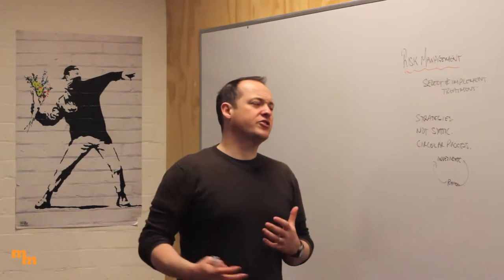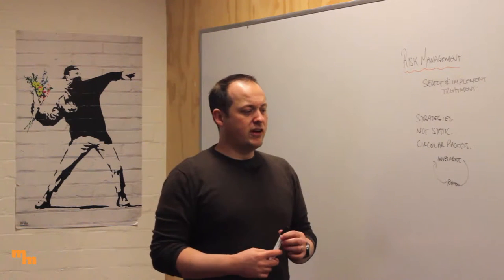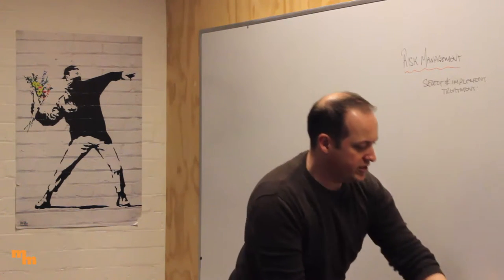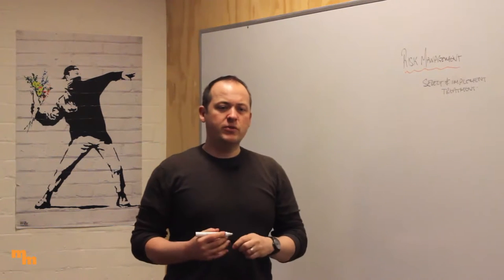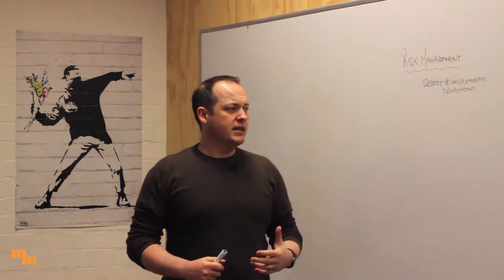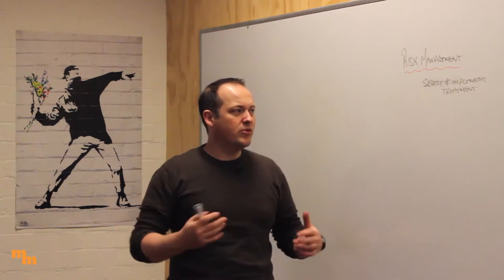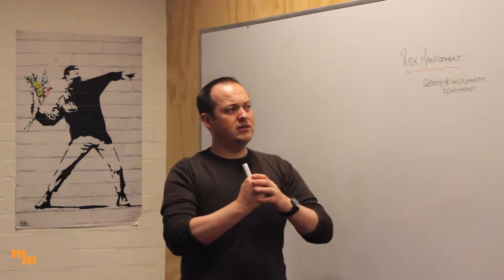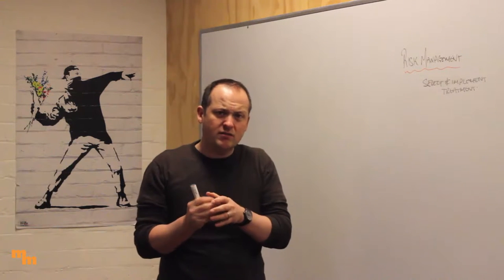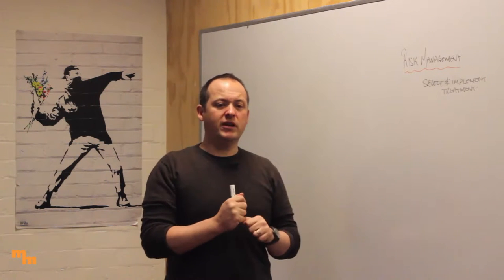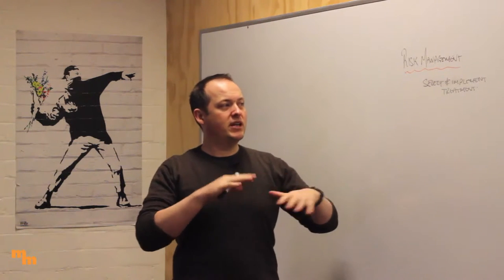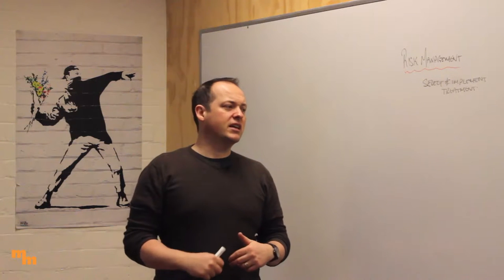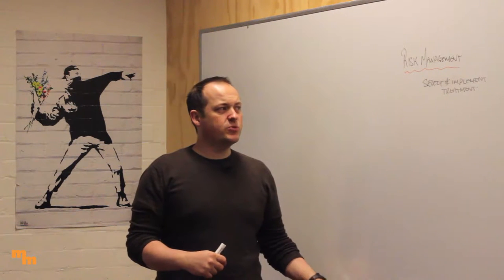There are a couple of different strategies we can implement when going through this. When we think about fixing risk, the first strategy is: can we avoid the risk — can we just get rid of it? Can we reduce the likelihood or consequence? Can we transfer the risk to someone else through insurance or outsourcing? Can we isolate the problem or isolate people from it? Or do we have to retain the risk at the end of the day?